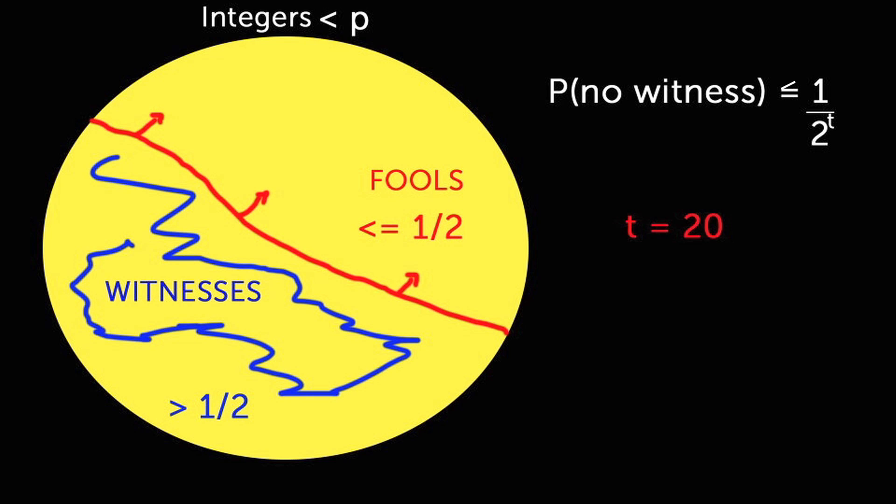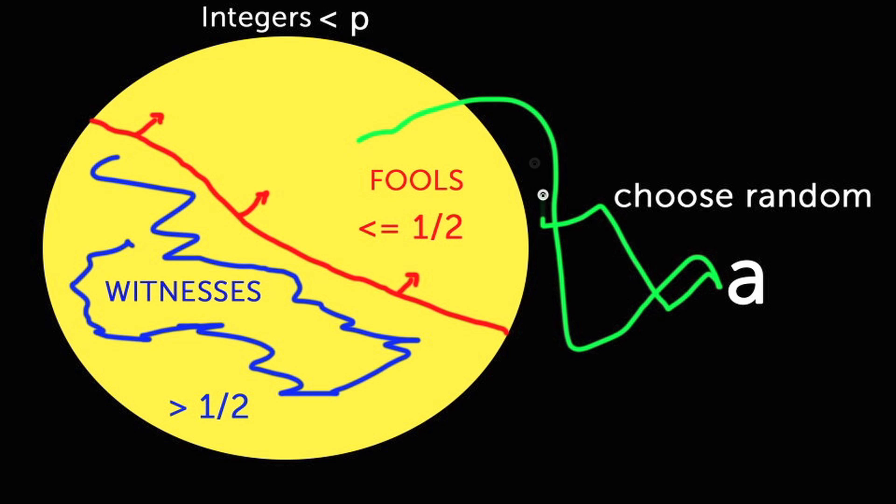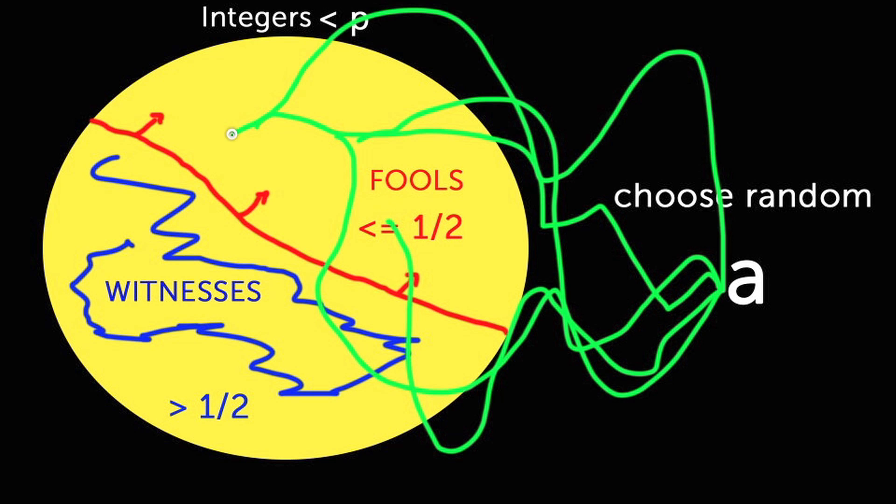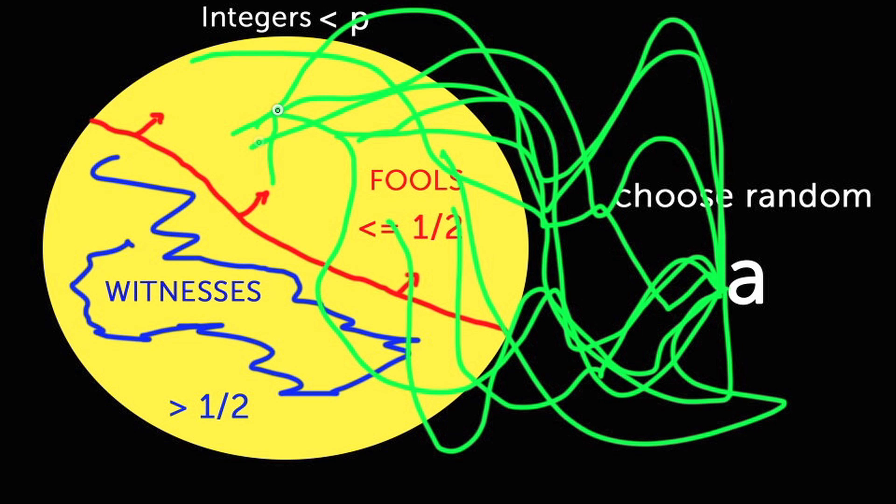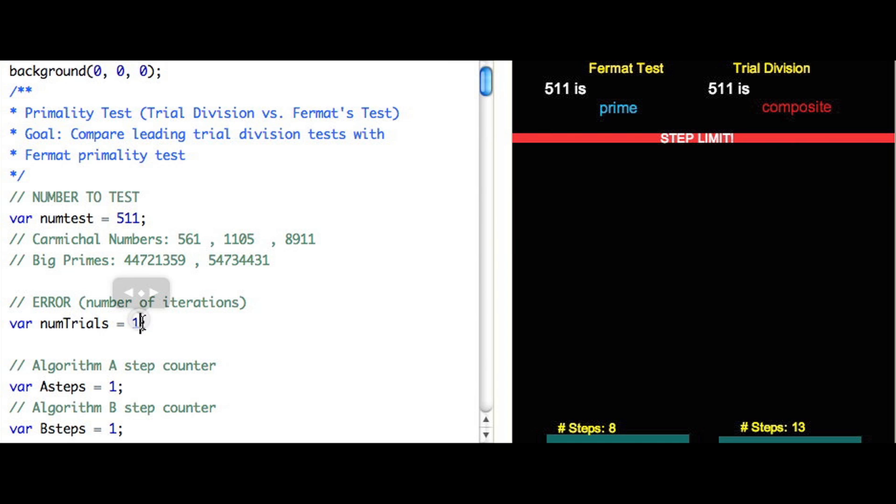So after 20 trials, the probability of mistakenly outputting a prime is just over one in a million. So that's the case where we just keep getting really unlucky and generating random A's every time we choose a fool. If you can let that sink in, that's really powerful to understand. And here now we can see our test in action with the increased number of trials. It seems to be working perfectly.